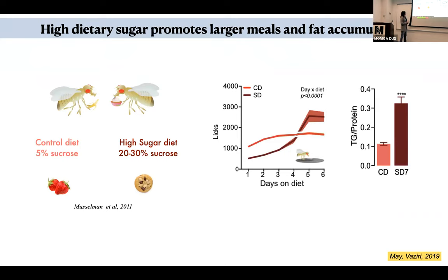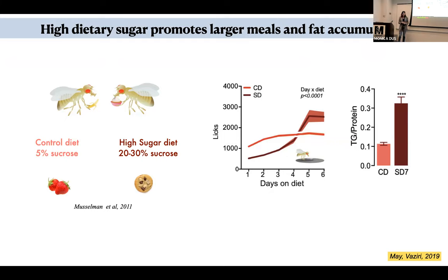Another advantage is that flies are pests that live in our kitchens, so they are tuned to some of the same things we like to eat, especially sugars. There are several models of diet-induced obesity in flies, and one of them is adding extra sucrose to their diet. This high-sugar diet is about 20 to 30 percent sucrose — the sweetness of a cookie — compared to the regular diet which is about 5 to 10 percent, close to the sweetness of strawberries.